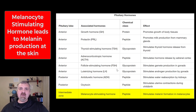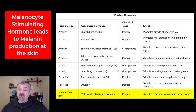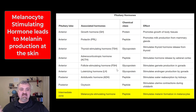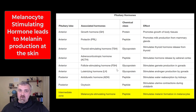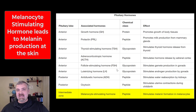The last pituitary hormone comes from the intermediate zone, between the anterior and posterior lobes. This is melanocyte-stimulating hormone. Like its name implies, it stimulates melanocytes. There are other things it does that we don't completely understand, but melanocyte-stimulating hormone stimulates melanocytes to make melanin.